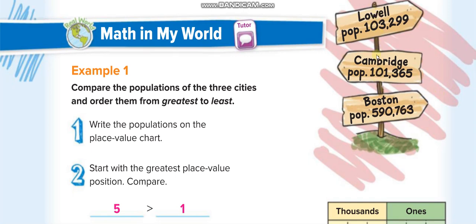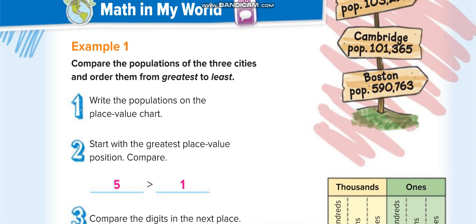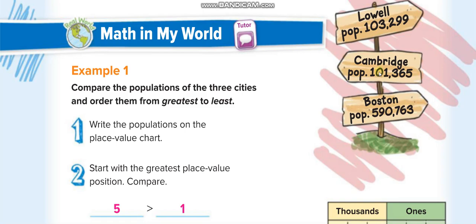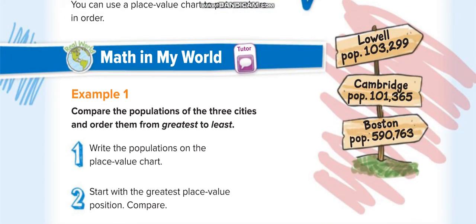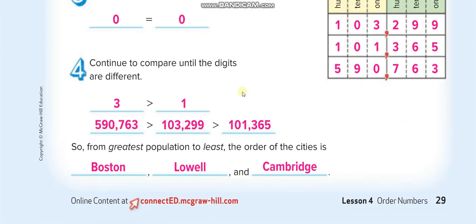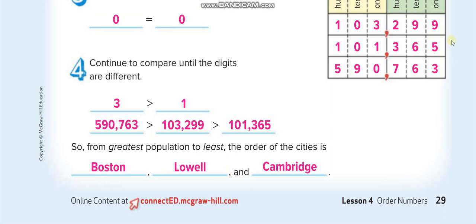At the ten thousands place, both remaining numbers have zero — same. At the thousands place, one number has one and the other has three, so three is greater than one, making Lowell greater than Cambridge. The order from greatest to least is Boston, then Lowell, then Cambridge. They show this in the place value table, writing each number under its correct place value column.